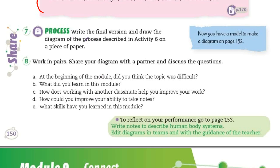Activity number seven: write the final version and draw the diagram. Bueno, esto no lo hacemos — lo hacemos después. Por ahora no.